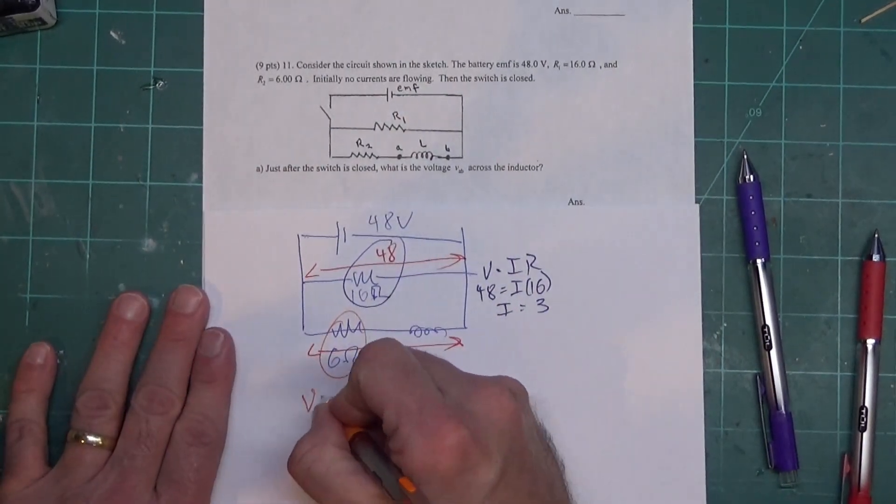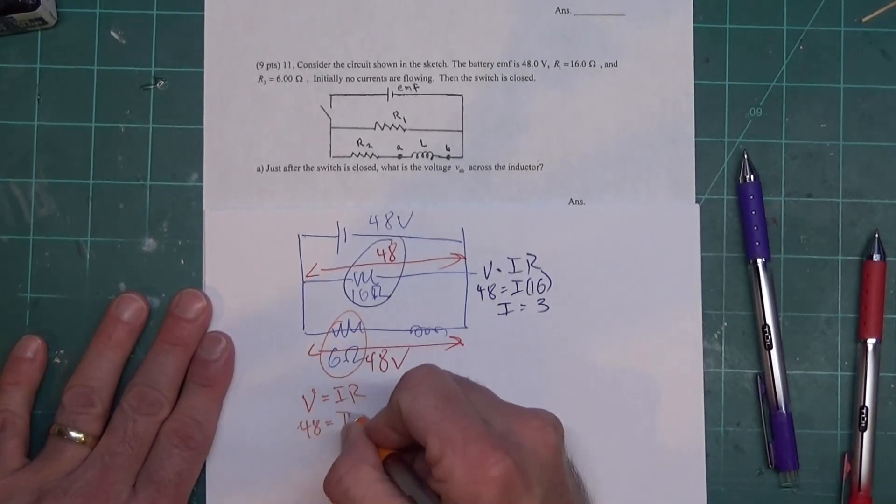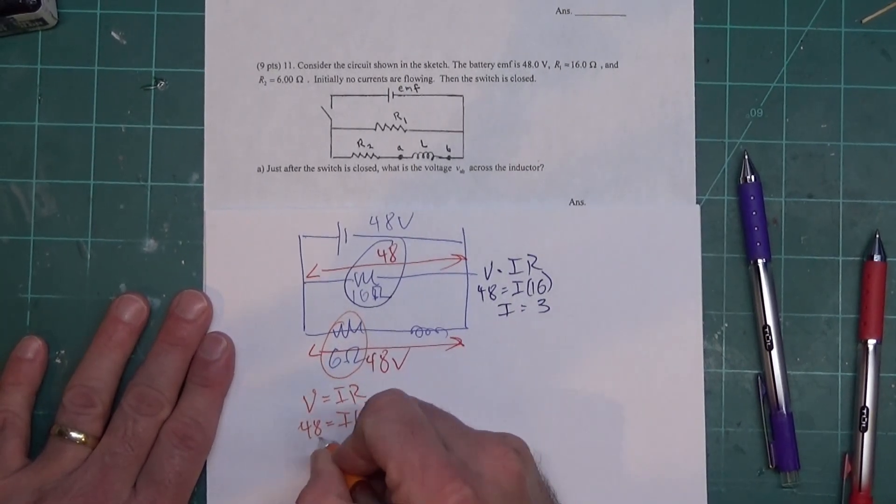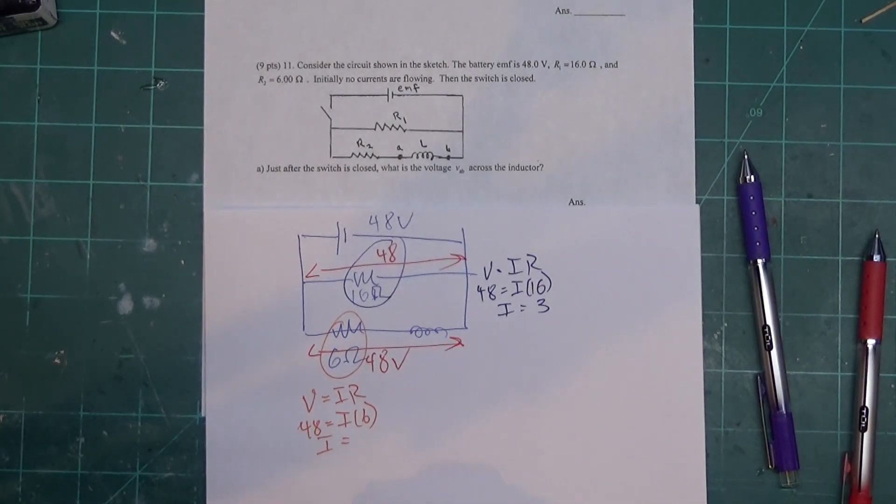On this bottom one down here, V equals IR, 48 equals I times 6, and I get I equals—that should be 8 amps. I'm going to check with a calculator because I'm a little on the tired side today. Yes, 8 amps.